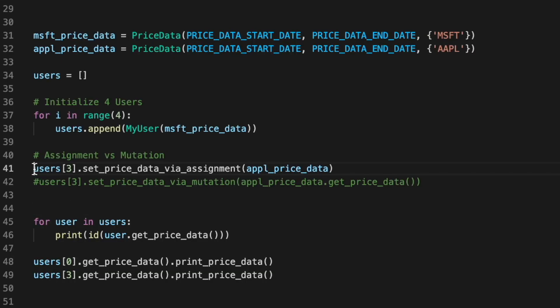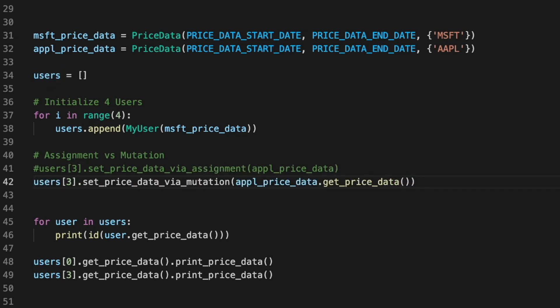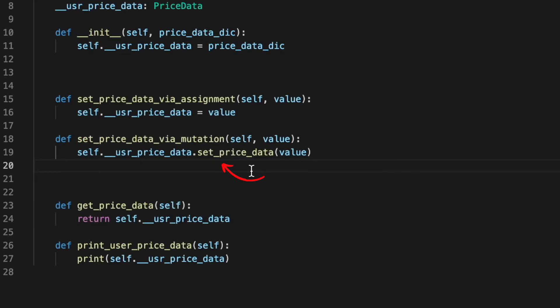We're now going to go back and instead of assigning a new value, we're going to mutate to a new value. Here you can see our mutation method.